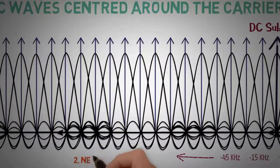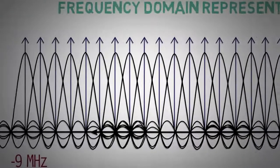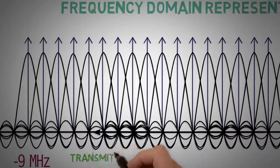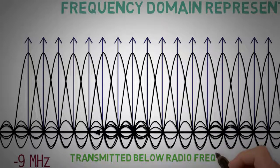Secondly, presence of negative frequencies. It can be explained by the fact that the sub-carriers are transmitted below the radio carrier.